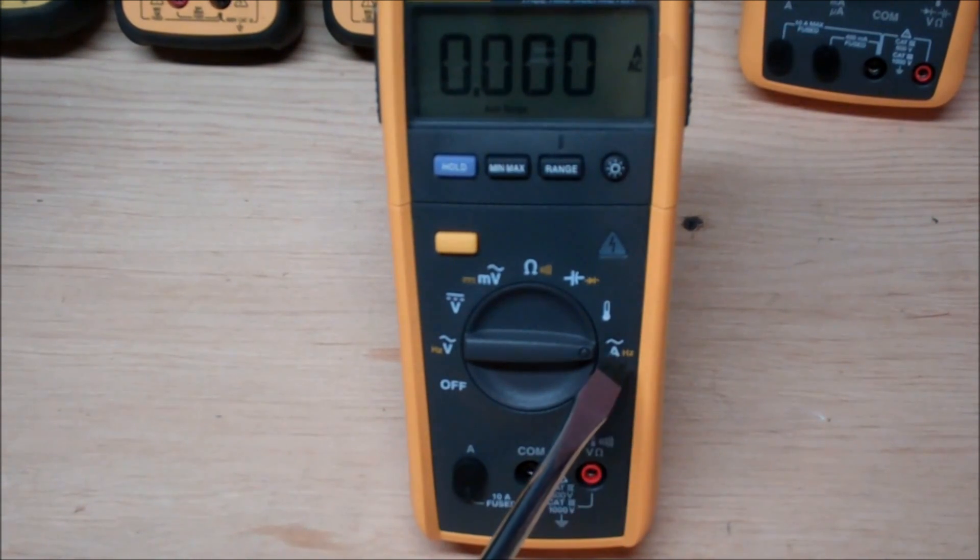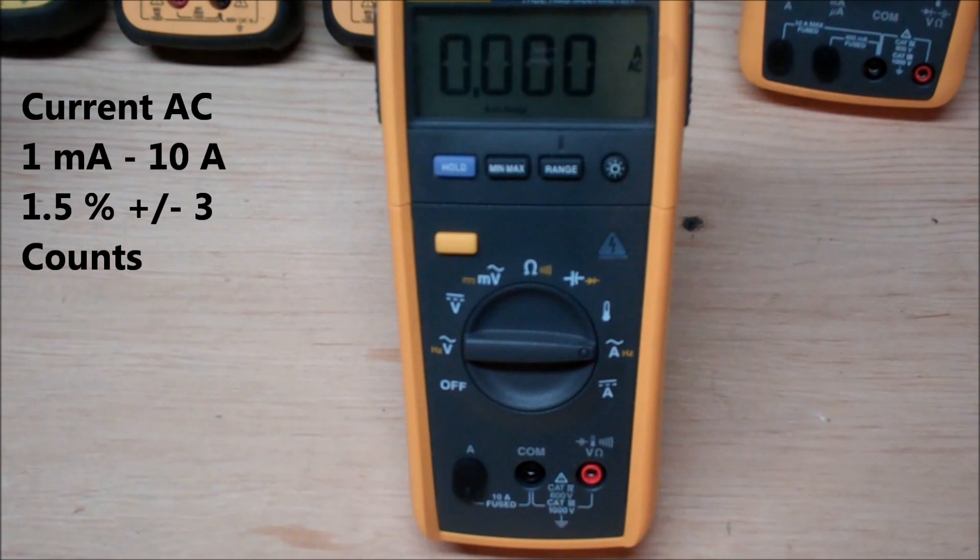Now as far as the accuracy goes for the actual AC measurement of amperage, you have a range from 1 milliamp to 10 amps and that is at an accuracy of 1.5 percent plus or minus 3 counts.